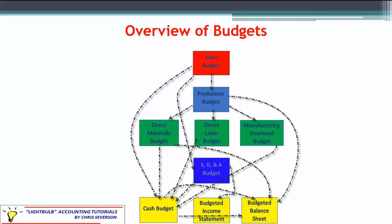Here is an illustration of the budgets we've gone through up to this point. We've done the sales and production budgets already, and now we're into our three production cost budgets. You can see a lot of linkage between the various budgets. Production obviously leads to each of these production cost budgets, including Manufacturing Overhead.